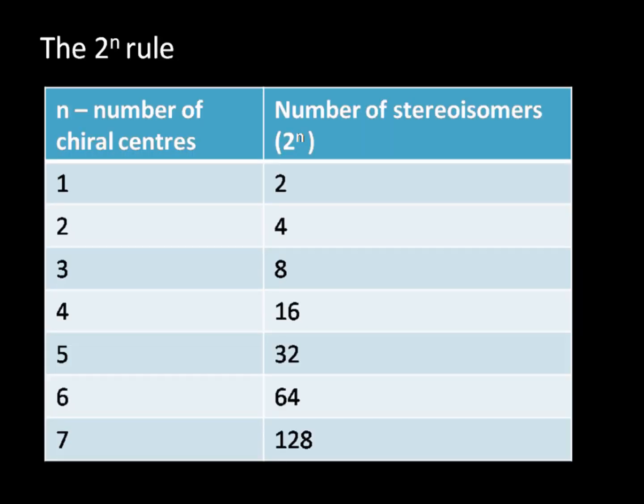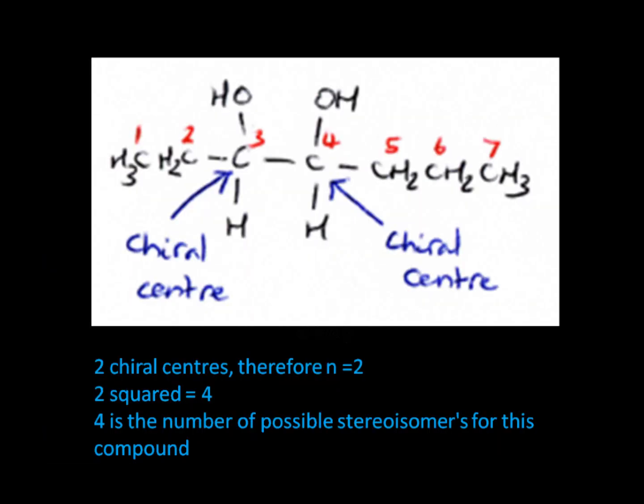Firstly, let me introduce the 2N rule. N represents the number of chiral centres in a compound. Therefore, if we find a compound with two chiral centres, 2 squared is 4. The number 4 represents the number of stereoisomers we have for this compound. If 4 chiral centres, 2 times 2 times 2 times 2 equals 16, representing the number of stereoisomers that are possible. Remember that there are always exceptions to this rule.